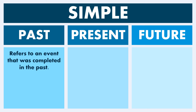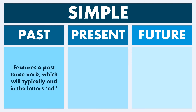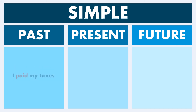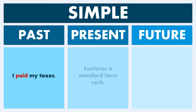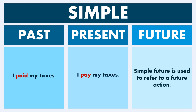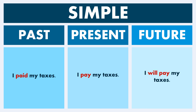Let's do a quick summary. Simple past has two jobs: it refers to an event that was completed in the past, or it refers to actions or events that were completed but are no longer applicable. Look for a past tense verb — they typically end in -ed, but there are irregular verbs. Example: 'I paid my taxes.' Simple present is used to express a habit or often repeated action done with regularity. Look for a standard form verb. Example: 'I pay my taxes.' Simple future is used to refer to a future action, featuring the word 'will' paired with a standard form verb. Example: 'I will pay my taxes.'